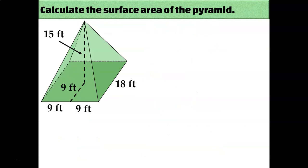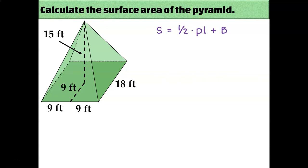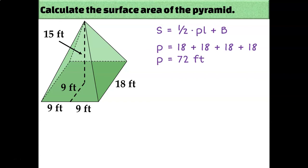Our next example is a square pyramid. I can tell it's a square pyramid because the side lengths of the base are all 18 feet — one side is labeled 18, and the other is labeled as 9 and 9, and 9 plus 9 is 18. There are four triangular faces that wrap around the square base and meet at the apex. Since it's a pyramid, I'll use the surface area of a pyramid formula. The perimeter of the square base is 18 times 4, which is 72 feet.